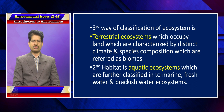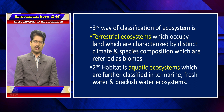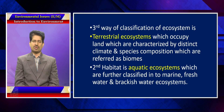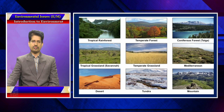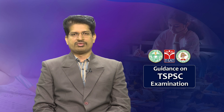A third way of classifying ecosystems is into terrestrial ecosystems and aquatic ecosystems. Terrestrial ecosystems exist on land with distinct climate and species — such as equatorial evergreen, savannah, tropical deciduous, or taiga. Aquatic ecosystems are classified into marine ecosystems, freshwater ecosystems, and brackish water ecosystems. We shall meet in the next topic discussing the structure of the ecosystem. Thank you.